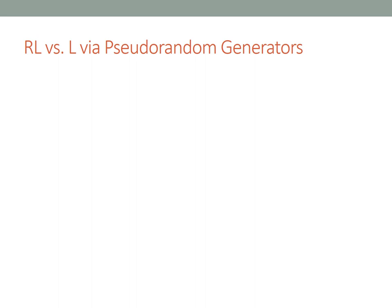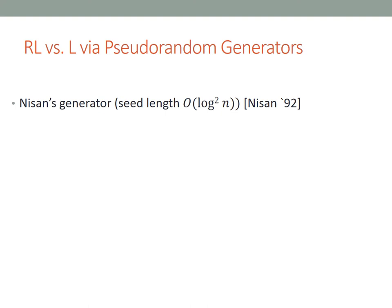This approach has made some notable progress. One example is Nisan's pseudorandom generator, which takes a seed of length log squared n and outputs a pseudorandom number that's n bits long. Using this, you go from log n space to log squared n space deterministically—a little worse than ideal, but better than nothing. This was further improved by Saks-Zhou, who showed that anything you can do in log n space with randomness, you can do in log to the three-halves n space deterministically.